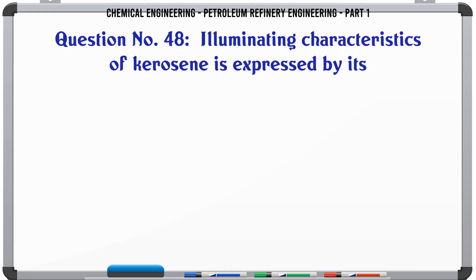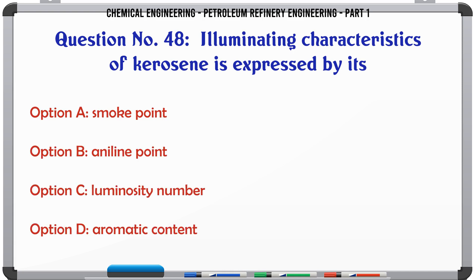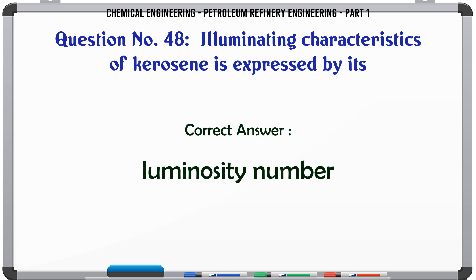Illuminating characteristics of kerosene is expressed by its: A. Smoke point, B. Aniline point, C. Luminosity number, D. Aromatic content. The correct answer is Luminosity number.